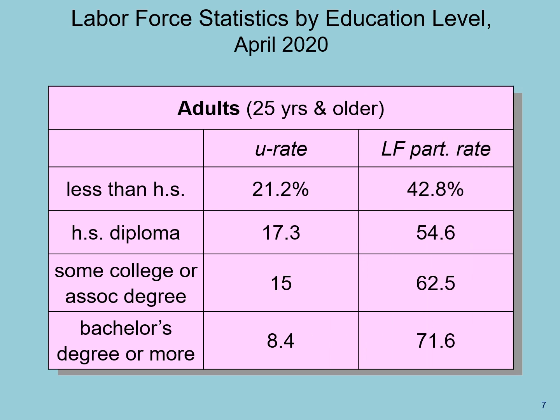In this table, you have the labor force statistics by educational level as of April 2020. On the left-hand side, we have the education level of a particular group, growing from least to most education. On the top, we have individuals who have less than a high school degree. Their unemployment rate is currently at 21.2%, and the labor force participation rate is 42.8% — less than half of the people in that category participate in the labor force.